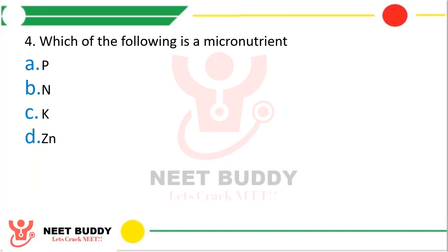Question 4: Which of the following is a micronutrient? Option A, phosphorus. Option B, nitrogen. Option C, potassium. Option D, zinc. The correct answer is Option D — zinc is a micronutrient.